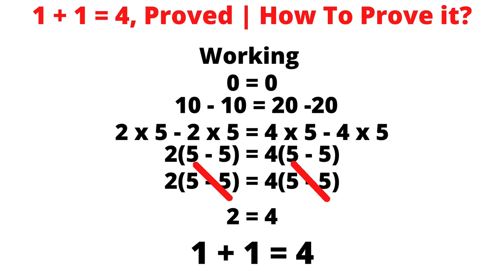If you expand ten minus ten to two times five minus two times five, and twenty minus twenty to four times five minus four times five — two times five minus two times five is the same as two times (five minus five), and four times five minus four times five is the same as four times (five minus five). So two times (five minus five) equals four times (five minus five). Cross the common terms, which are (five minus five), giving you two equals four.